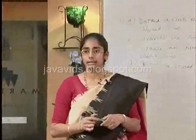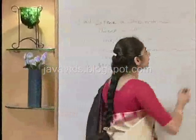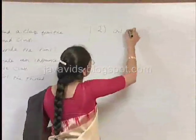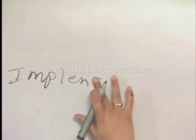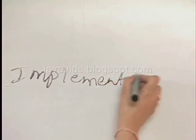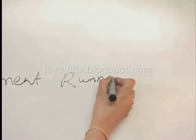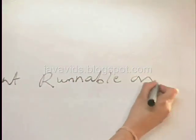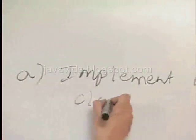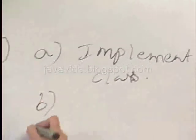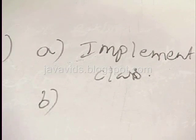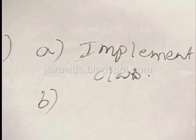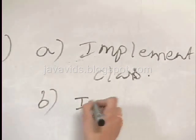In the second method, that is implementing the Runnable interface, the first thing you do is implement Runnable on a class. This Runnable interface has only one single method, that is the run method. So you implement the run method.